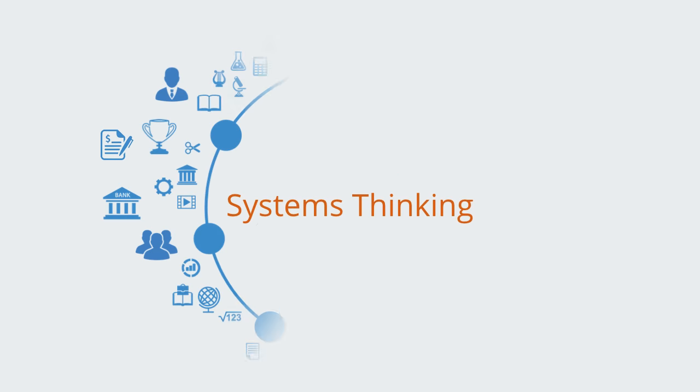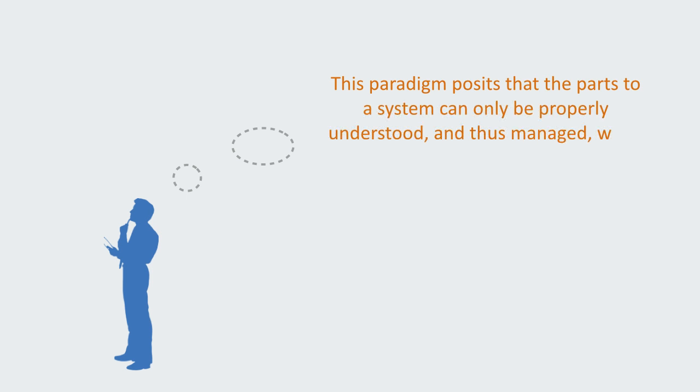Firstly, complexity management is based on the systems thinking paradigm, that we'll be discussing in a coming module. Put simply, systems theory or systems thinking is a holistic way of looking at the world. This paradigm posits that the parts to a system can only be properly understood, and thus managed, when taken in relation to the whole system.